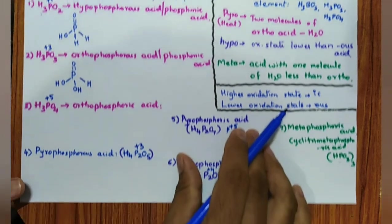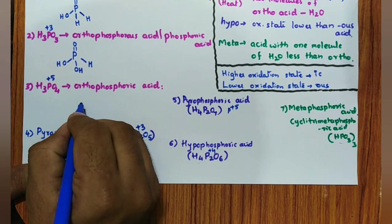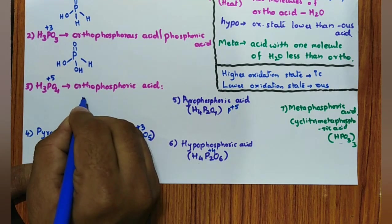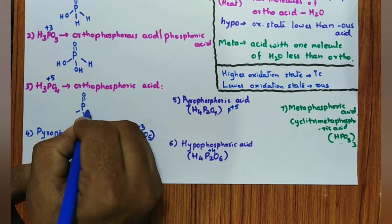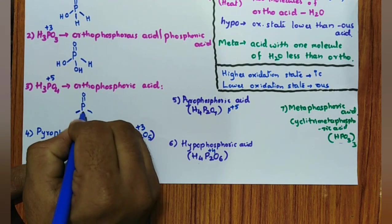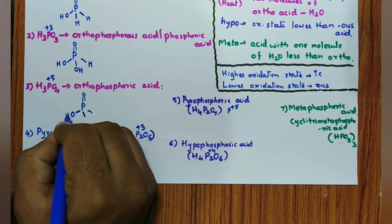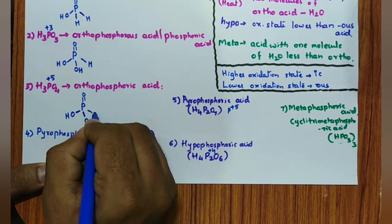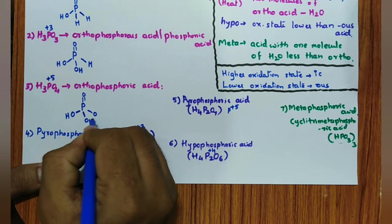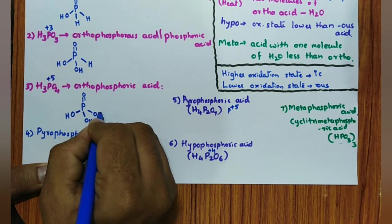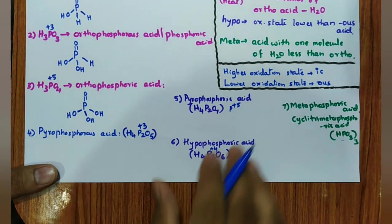Orthophosphorous acid (H₃PO₃): tetrahedral with P=O double bond, remaining gives three bonds. One P=O and one P–O–H compulsory, then remaining two oxygen and two hydrogen. Very easy to draw.